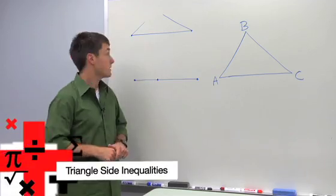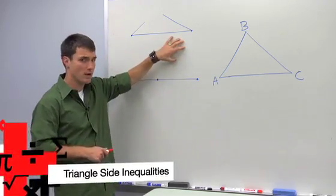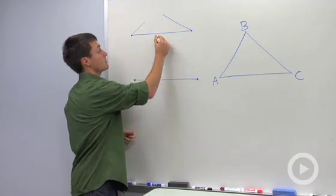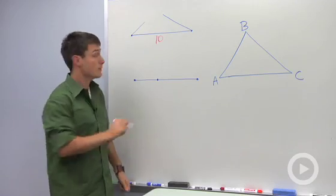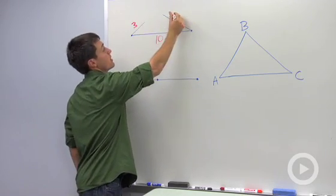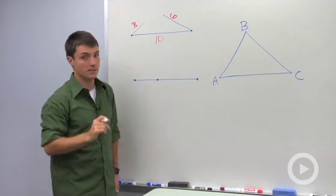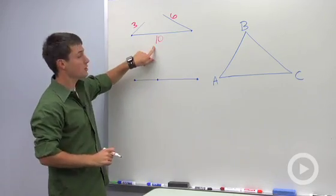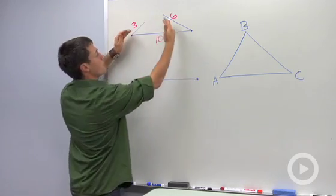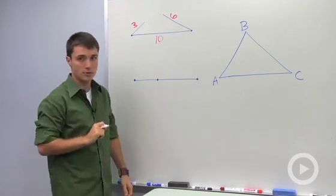Let's say I gave you three pieces of spaghetti and you tried to make a triangle out of them. So I'm going to say that this piece of spaghetti is ten inches long, this piece right here is three, and this piece right here is six. Does it look like we're going to be able to make a triangle out of this? It looks like we don't quite have enough to close that arch.